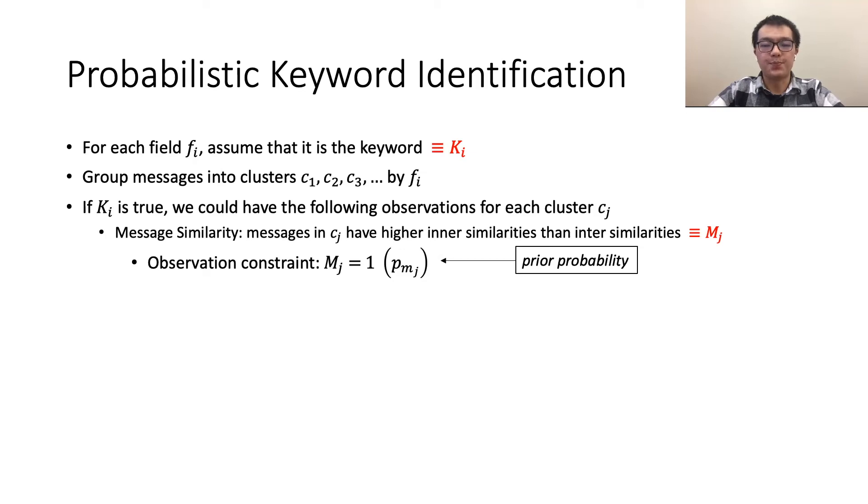In the paper, we provide details of how to compute it. Another kind of uncertainty lies between the observation and the assumption Ki. That is, true clusters may not demonstrate such observation and the observation does not necessarily imply true clustering here. Thus, we also introduce two implication constraints regulated by implication probabilities, denoting the confidence of the observation. The first implication constraint denotes that if field fi is the keyword, there is a p-error chance that the message similarity is observed. The second constraint represents the opposite direction of reasoning. Intuitively, the two constraints describe the uncertainty of the relations between Ki and Mj. Unlike the prior probabilities, the existing literature of probability inference typically use predefined values for implication probabilities, and it shows that inference results are usually not sensitive to these values due to the iterative nature of inference algorithm. We follow the same practice here.